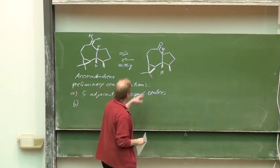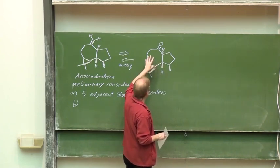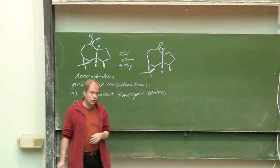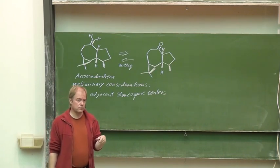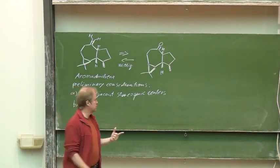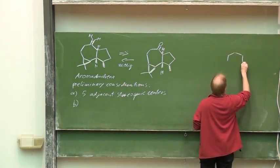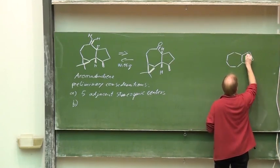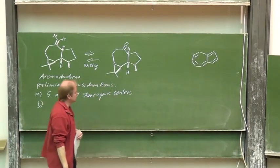We have this not unusual combination of seven and five membered ring. You know these seven and five membered ring combination from a natural product azulene. But isomer of naphthalene.